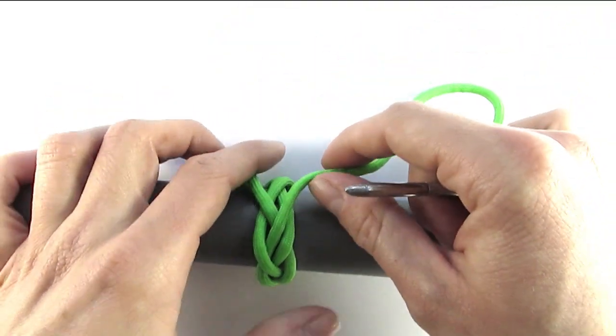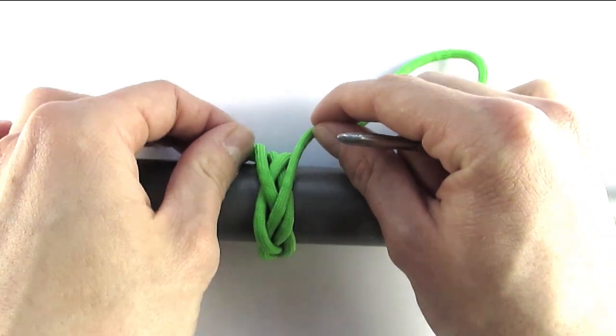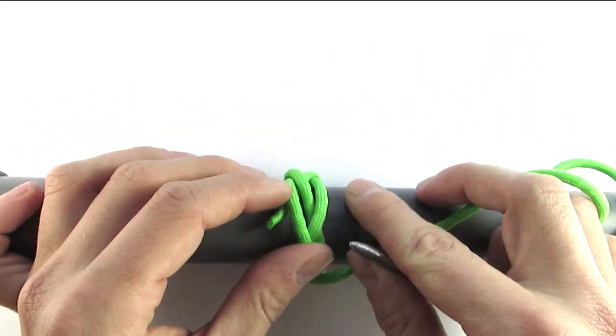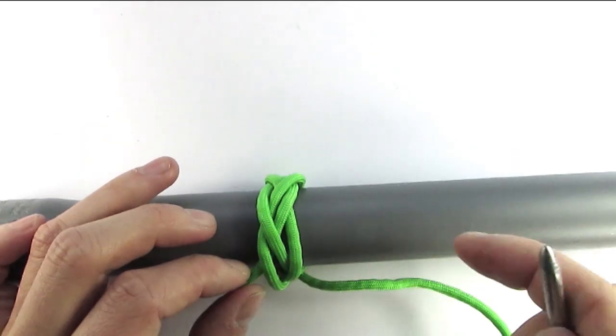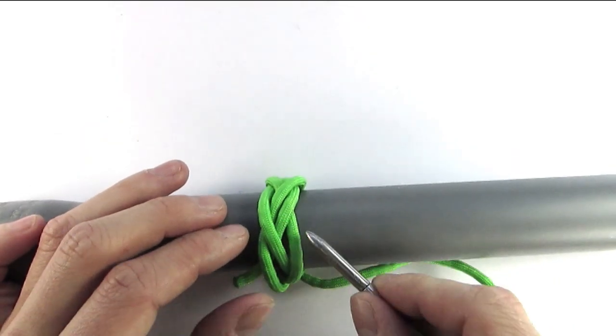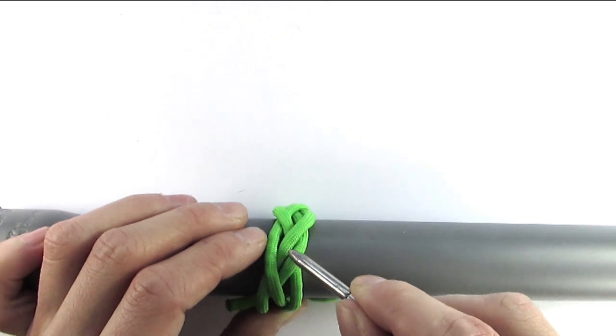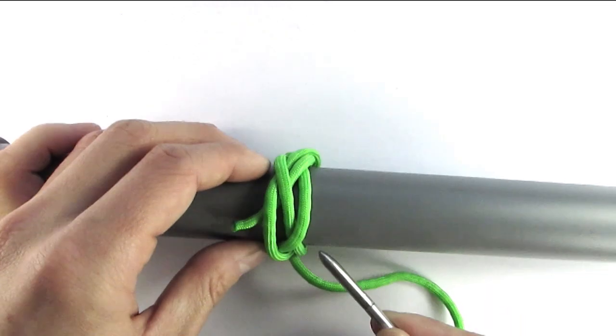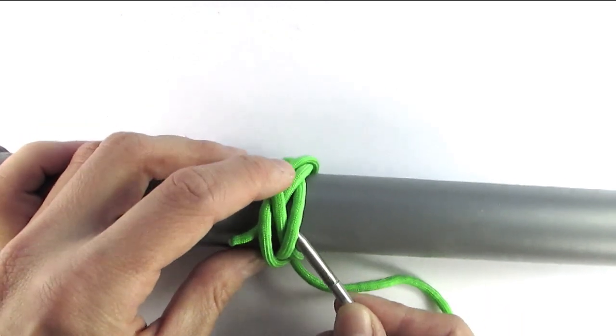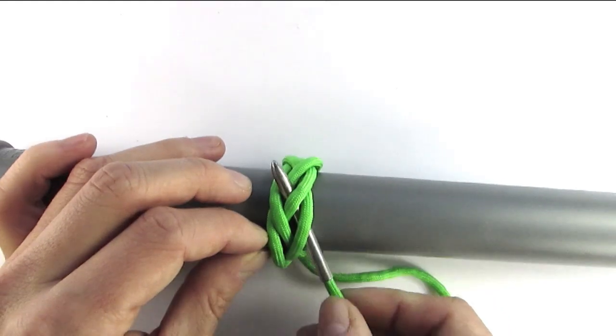We're going to find our two parallel cords. In this case they would be the standing and working end, and we're going to split them going under two, following the cord that goes over them like this.